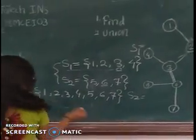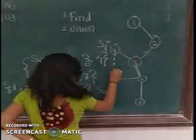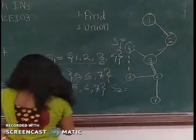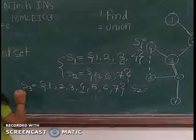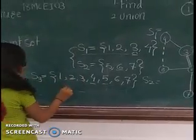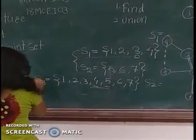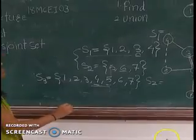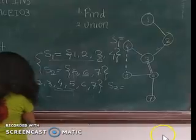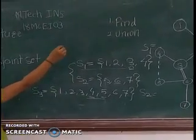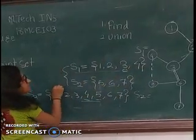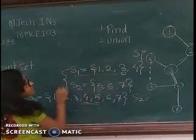If we try to connect nodes 4 and 5, both are already in set S3. Both contents are in the same S3 set, so we cannot combine them because doing so would form a cycle. This shows how disjoint sets help us detect cycles in a data structure.